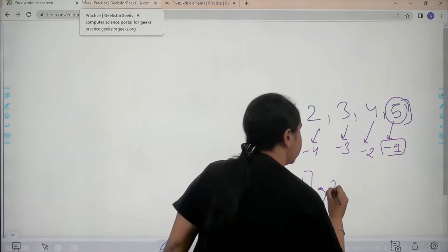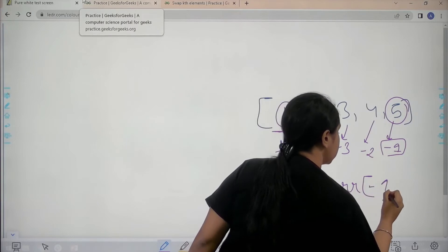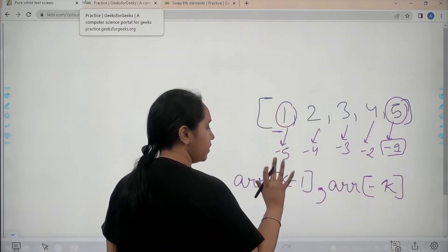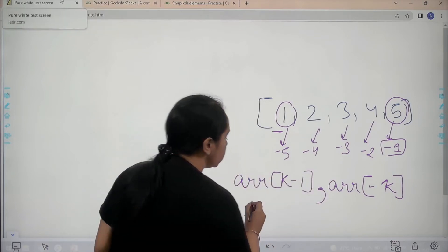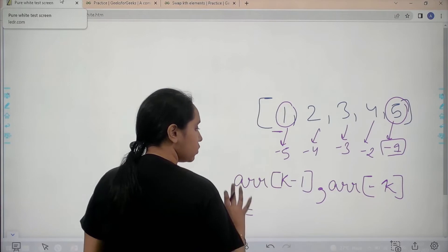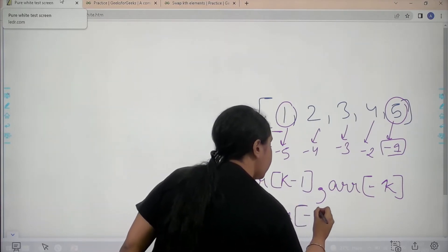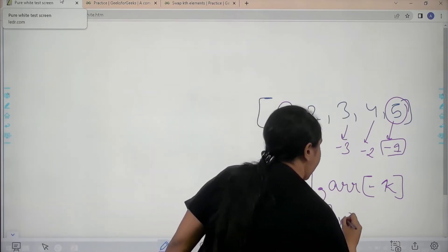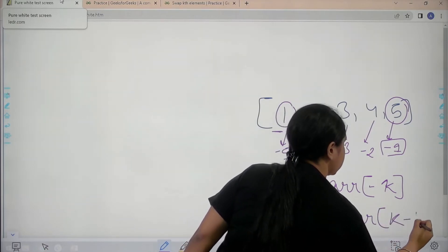Array of the first element comma array element that is minus k. Minus k is the last element. So these are the two elements that I need to swap. So I can just write the elements with the index positions and then how do I want them swap? I want minus k to be coming first, the value to come first and then the first element to be the last one.